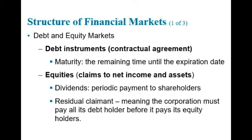The second method of raising funds is by issuing equities, such as common stock, which are claims to share in the income after expenses and taxes, and the assets of a business. If you own one share of common stock in a company that has issued 1 million shares, you are entitled to 1/1,000,000th of the firm's net income and 1/1,000,000th of the firm's assets. Equities often make periodic payments called dividends to their holders, and are considered long-term securities because they have no maturity date.